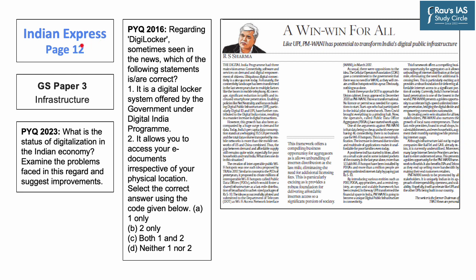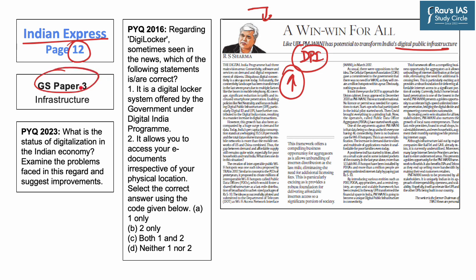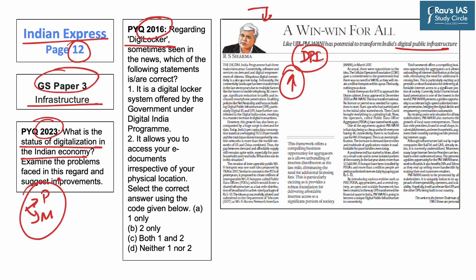Moving on to the next article of the day, which appeared in page 12 of the Indian Express. This article explains how the Digital India program has enabled focus on building digital public infrastructure, resulting in a massive increase in digital transactions across the Indian economy. This digital public infrastructure is important from GS Paper 3 perspective, as the syllabus highlights infrastructure. A question on the status of digitalization in the Indian economy appeared in mains 2023, and initiatives like DigiLocker appeared in prelims 2016. Hence, this topic is important from both prelims and mains perspective.